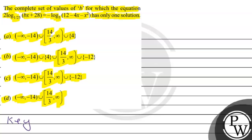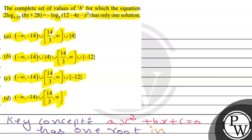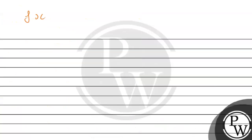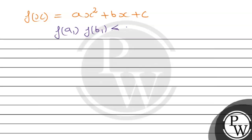Firstly, I will tell you the key concept that will help in solving the question. The quadratic equation f(x) = ax² + bx + c = 0 has one root in open interval (a1, b1). The condition for this is that f(a1) times f(b1) is less than 0.